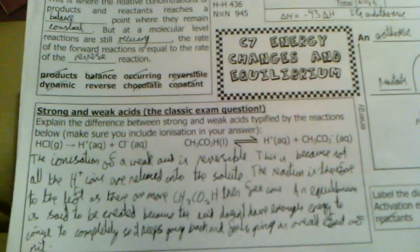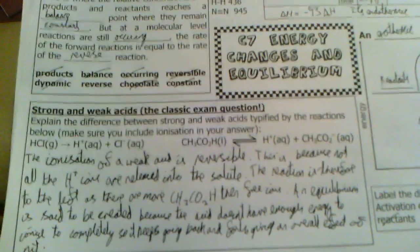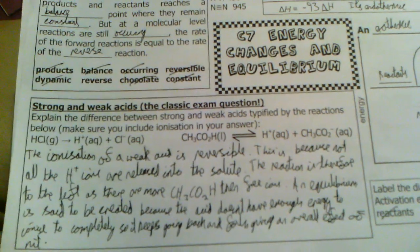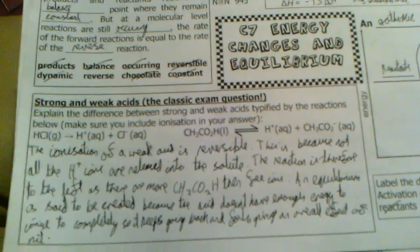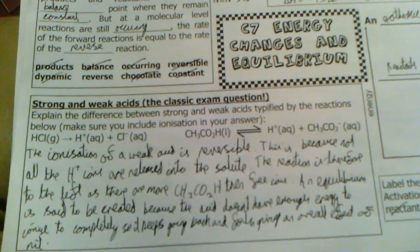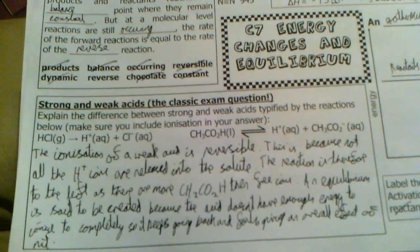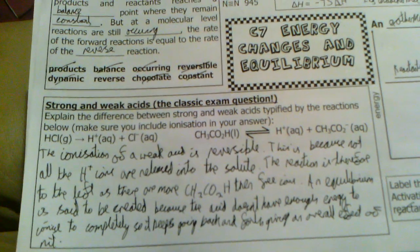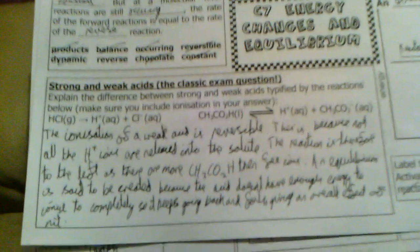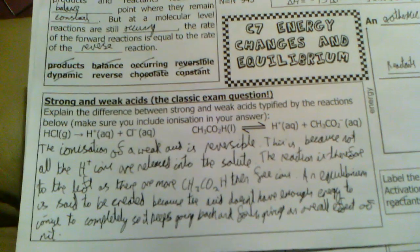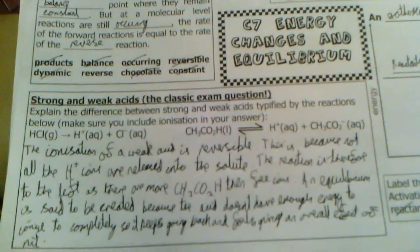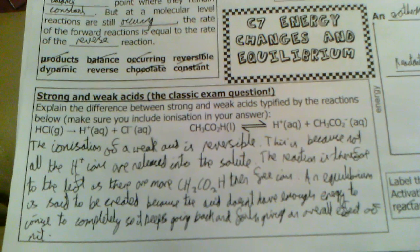Now, strong and weak acids. Apparently, this is a classic exam question, so this is exciting. Explain the difference between strong and weak acids. Now, in a strong acid, they just ionise completely in water. Dissolve, basically. So, that's because they're strong. However, if it's a weak acid, like a carboxylic acid, they won't ionise completely.